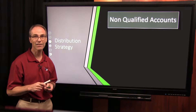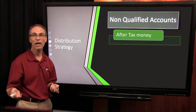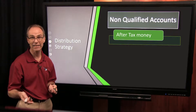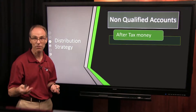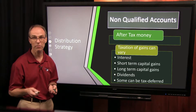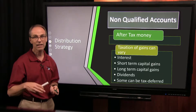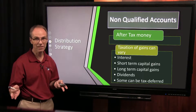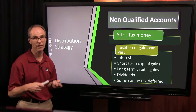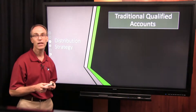Non-qualified accounts typically involve after-tax money. What happens is on these accounts you'll have some gains — hopefully — and those will come from interest, short-term capital gains, and long-term capital gains. The taxation of these things may vary based on the type of account. You also have dividends, and some of these things may be tax deferred.